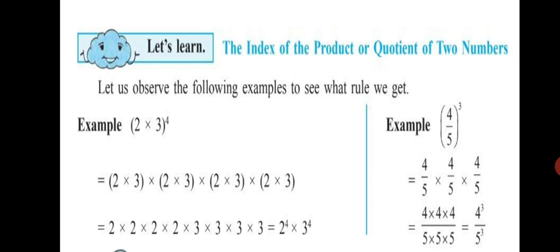From this we derive a formula. Look at the question: (2 × 3) raised to 4, and the final answer is 2 raised to 4 into 3 raised to 4. So the formula is: (A × B) raised to M is equal to A raised to M into B raised to M.